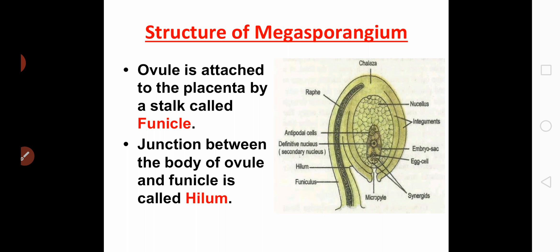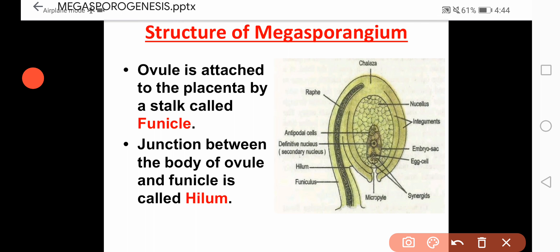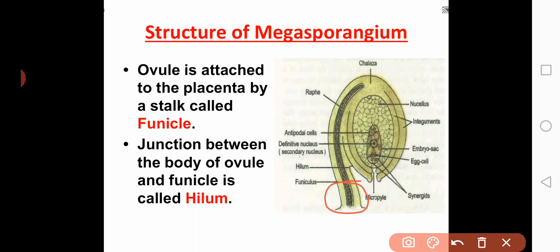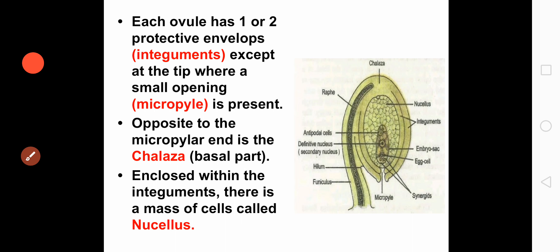This megasporangium is also called the ovule, and this ovule is attached to the placenta with the help of a stalk called the funicle. In this picture, this part is the funicle — with the help of this stalk, the ovule is attached to the placenta. The junction between the funicle and the main body of the ovule is called the hilum.